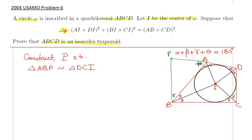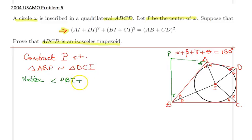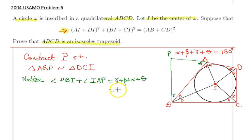With that, I can make the following observation: in quadrilateral PBIA, two opposite angles — namely angle A and angle B — add up to 180 degrees. Notice that angle PBI + angle IAP equals gamma + beta + alpha + theta, which is already shown to be 180 degrees. This suggests that in fact points A, P, B, and I are concyclic.